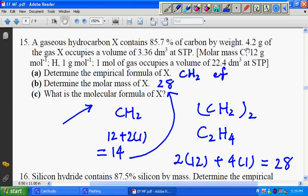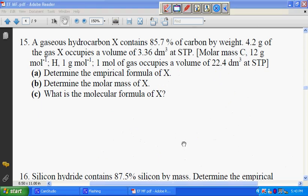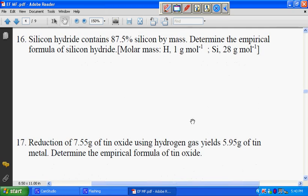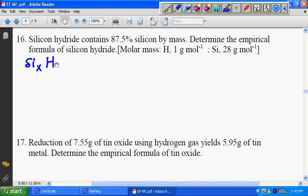Let's move on with another question. Silicon hydride contains 87.5% silicon by mass. Determine the empirical formula of silicon hydride. Silicon hydride is in the form of SiHxy.